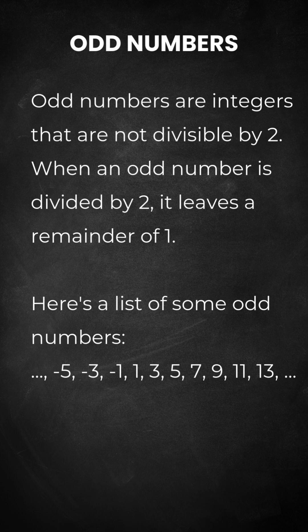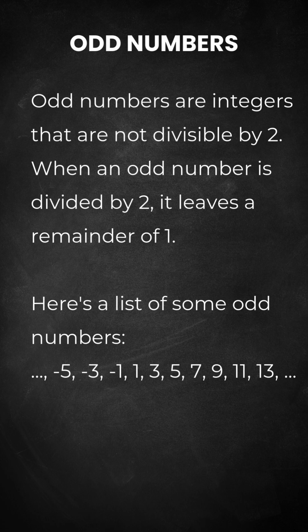Here's a list of some odd numbers: minus 5, minus 3, minus 1, 1, 3, 5, 7, 9, 11, 13.